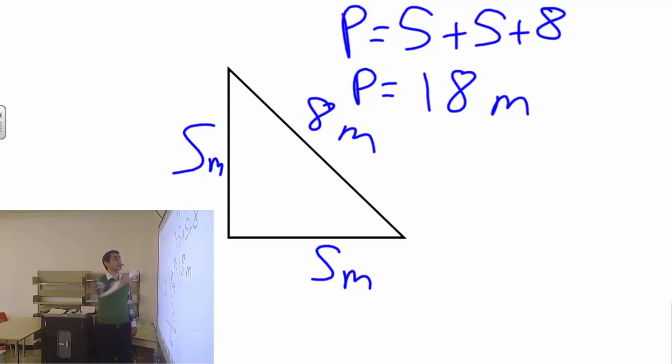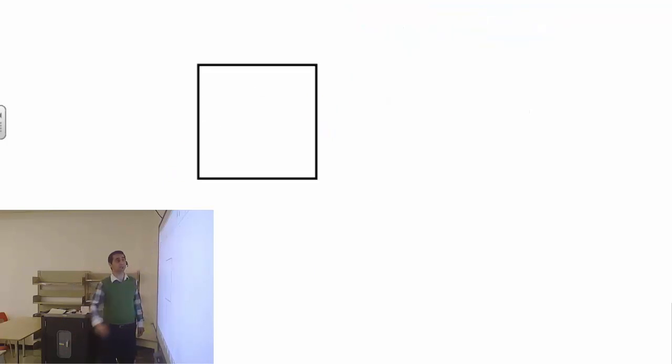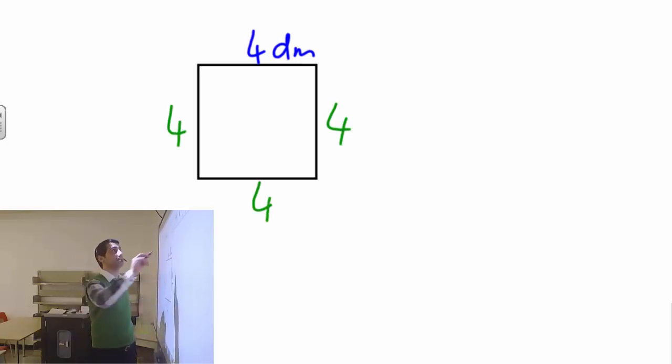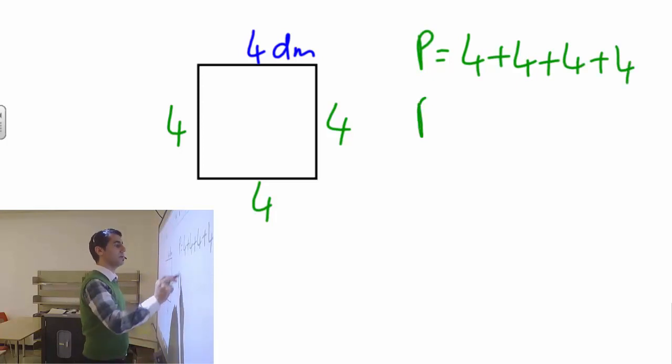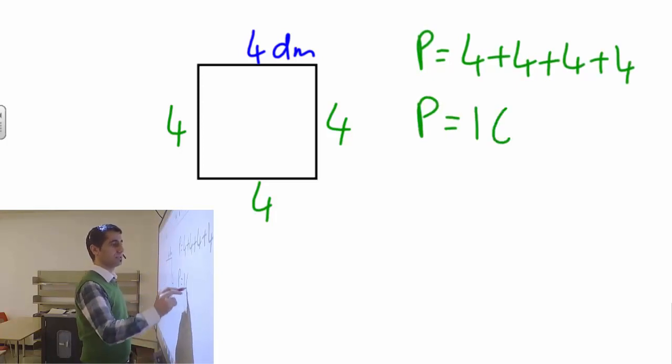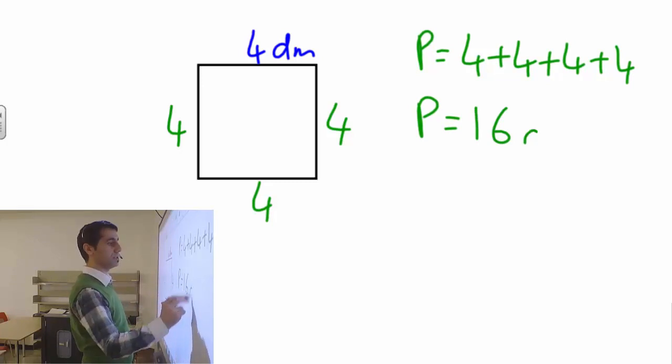Very quickly, one more example. Now we're looking at a square. If this is a square, I don't have to give you all the sides. You already know that all sides are the same. Let's say this is 4 decimeters. So you know that this is also 4, this is also 4, and this is also 4. Let's add: perimeter equals 4 plus 4 plus 4 plus 4. Perimeter equals 16 decimeters.